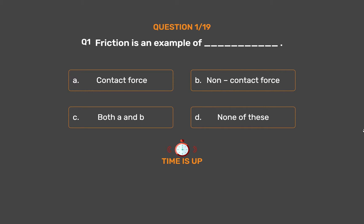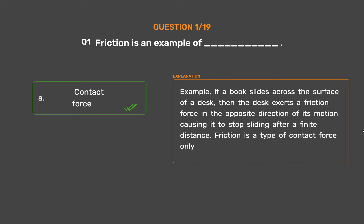The correct answer is Option A: Contact force. For example, if a book slides across the surface of a desk, the desk exerts a friction force in the opposite direction of its motion, causing it to stop sliding after a finite distance. Friction is a type of contact force only.